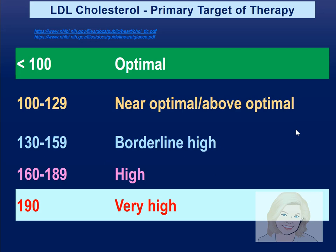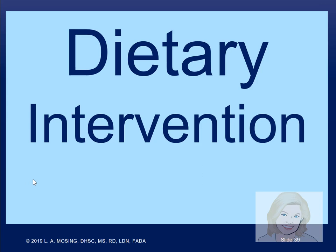We know that LDL is our target. When a patient comes in for an annual physical and total cholesterol is a little high, we then look at LDL. Near optimal to optimal is 100 to 129, but the optimum — the best results — is less than 100. The goal is to use lifestyle, not drugs. If someone needs drugs, the goal is to use the least possible dose, alongside lifestyle changes that can lower LDL.